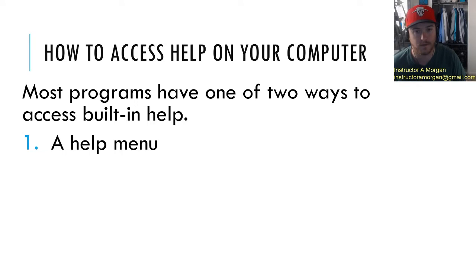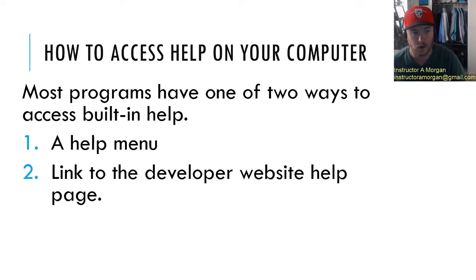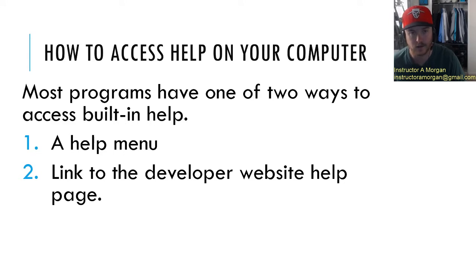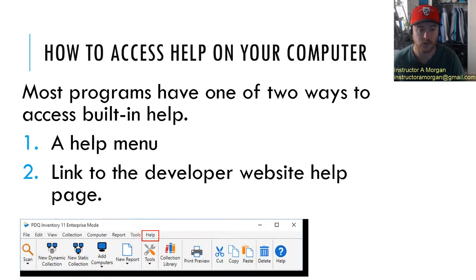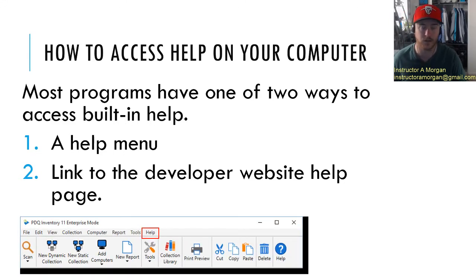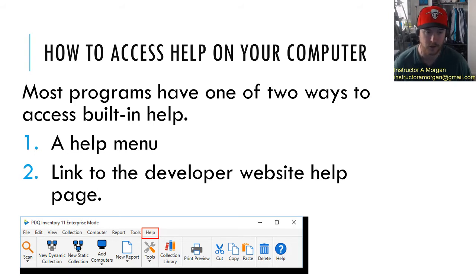Most programs have one of two ways to actually help you. They have a built-in help menu, or they'll have a link to that developer's website so that you can get your questions answered using either of those methods. An example of that first one — a help menu — you might see this in Microsoft Office or another program that you work in. You'll see an option with a drop-down menu with the help button, and that'll all be done within your program unless it links to the developer's website.